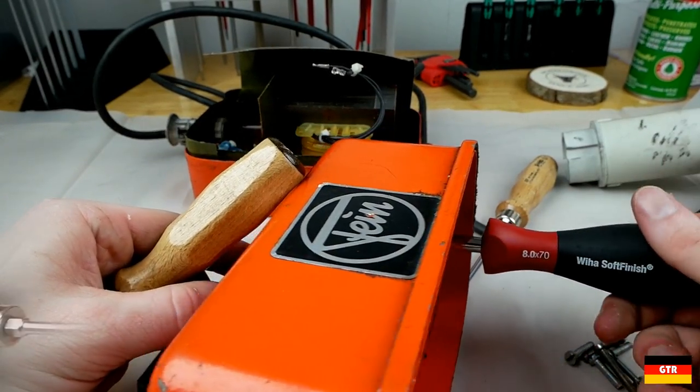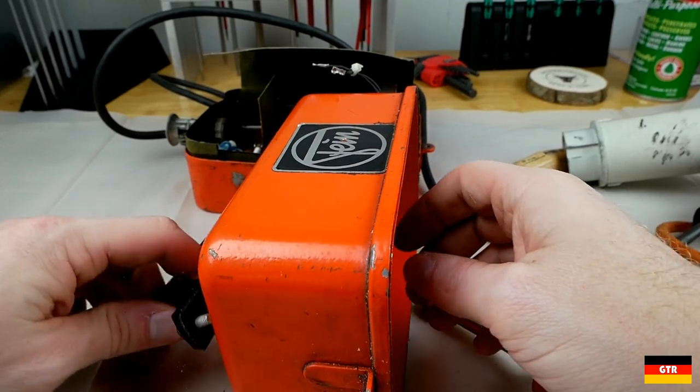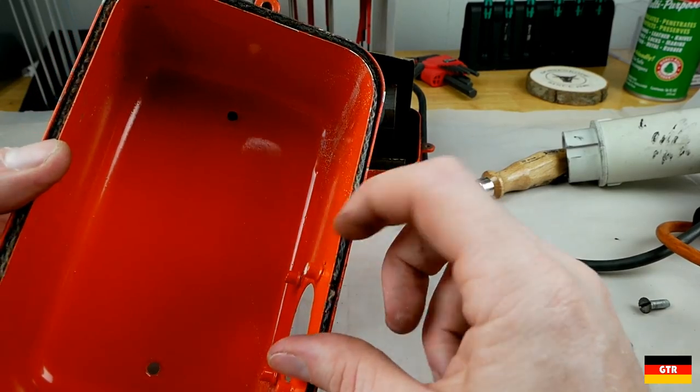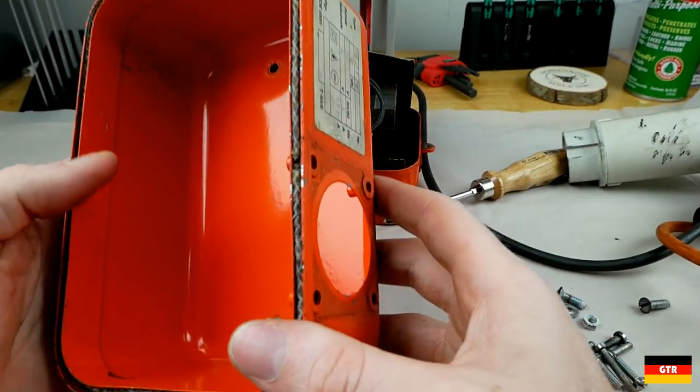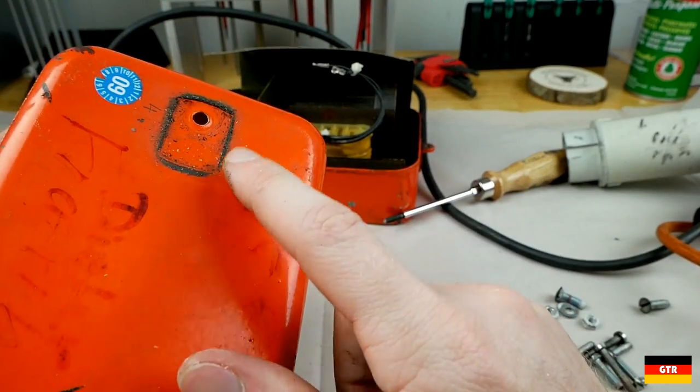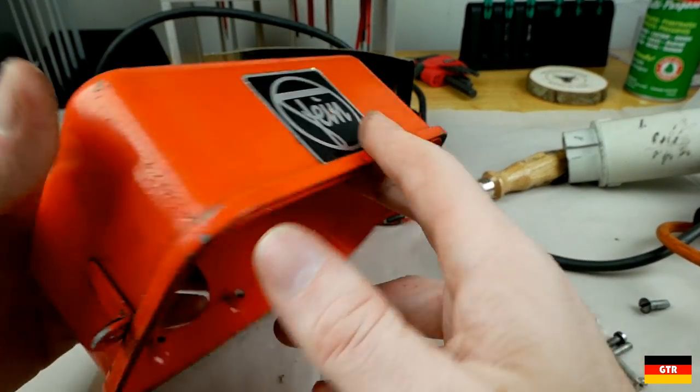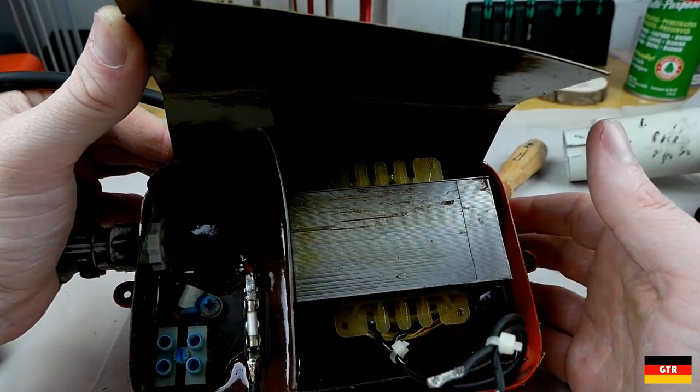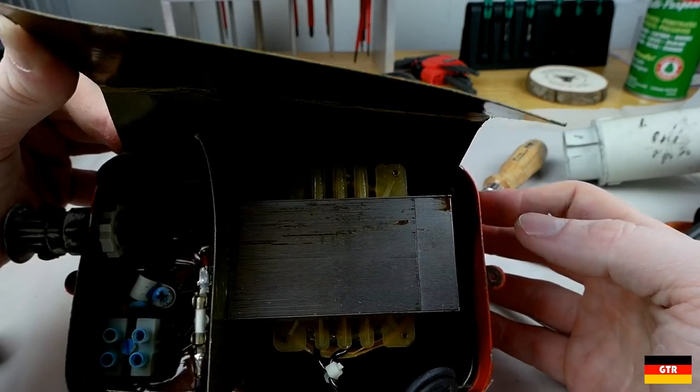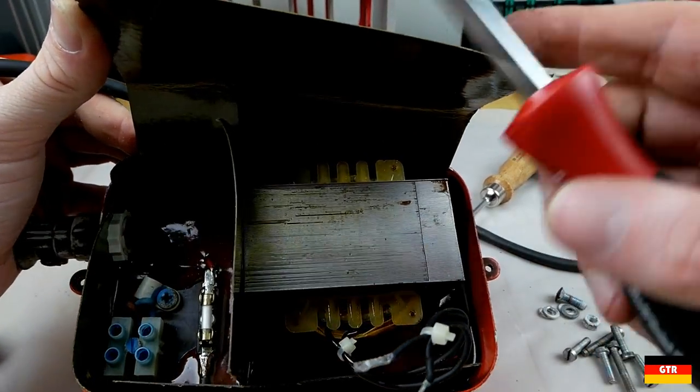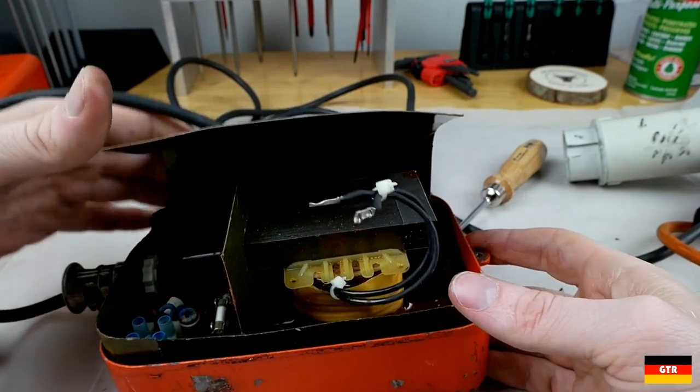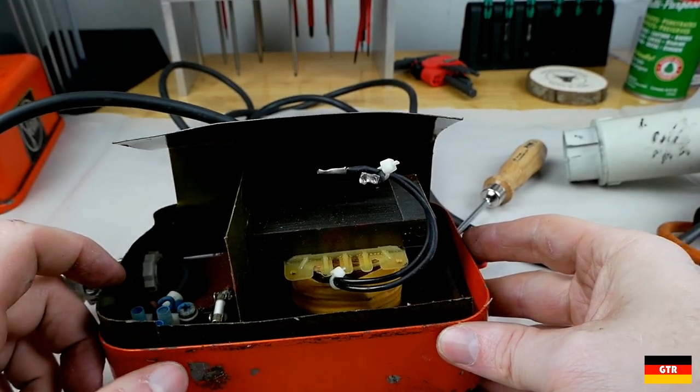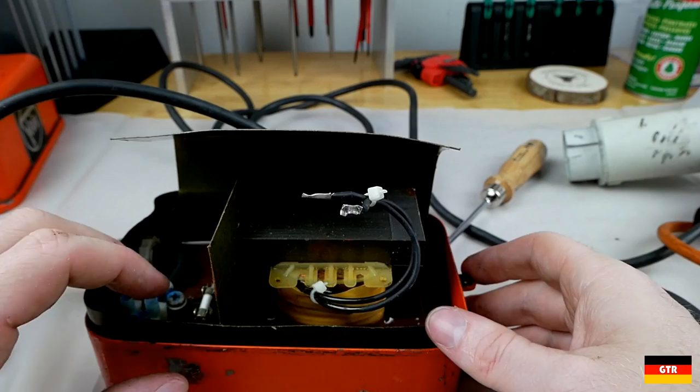This was definitely a professional job. You can see they actually crimped a ferrule onto that. So there's our connector. We'll try to clean that up as best we can. Alright, so now we can take the cover off here. So I'll go ahead and take off this handle because I think we're going to try to clean this up. We'll give it a mild restoration.